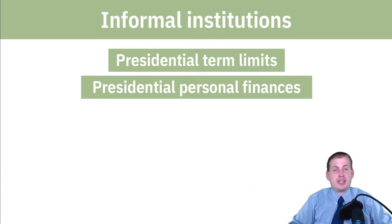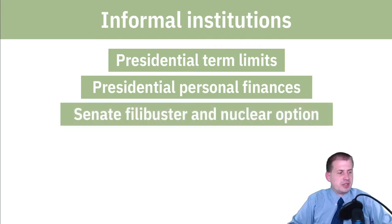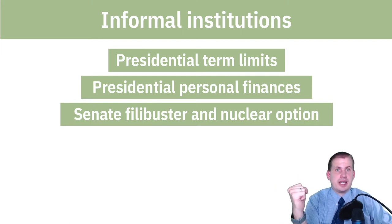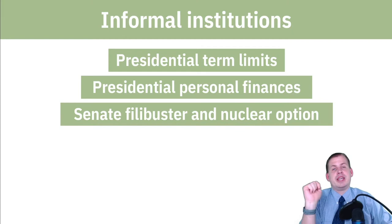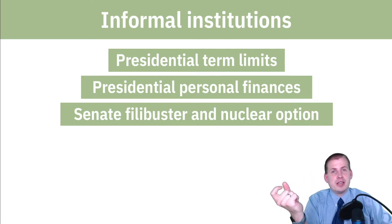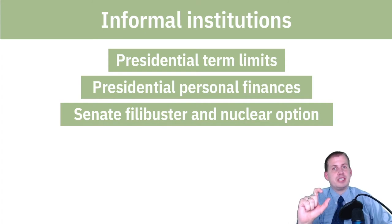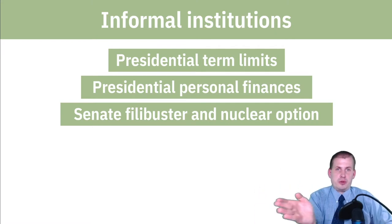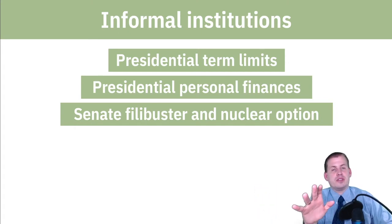We also see this with the Senate filibuster, where any senator can hold up a piece of legislation. Technically, it started decades ago where a senator could stand up on the floor and speak for hours and hours — they had to be speaking the whole time to hold up debate and votes. Nowadays they just have to press a button saying 'I'm filibustering.' Both parties, whenever one is in power, face a temptation to remove that institution and make it essentially illegal — eliminating that informal institution of the filibuster.